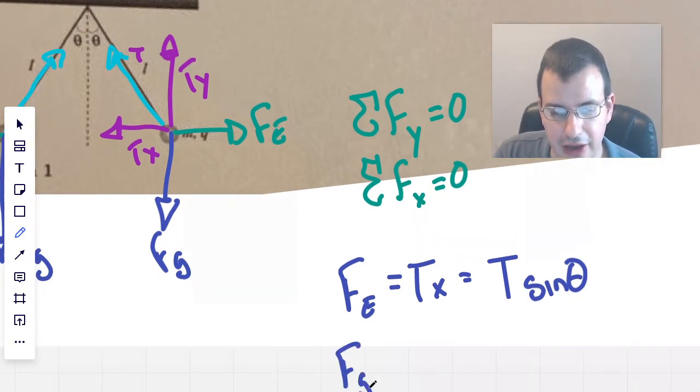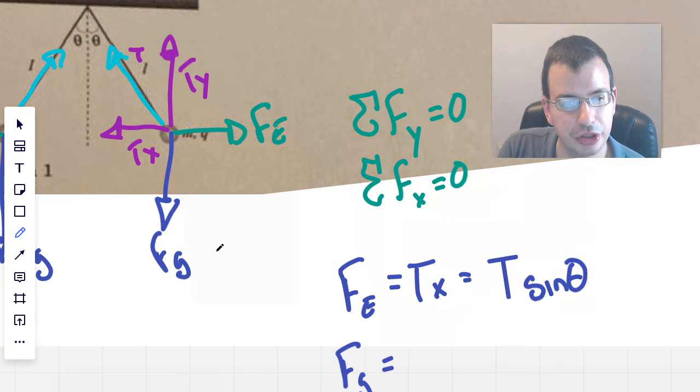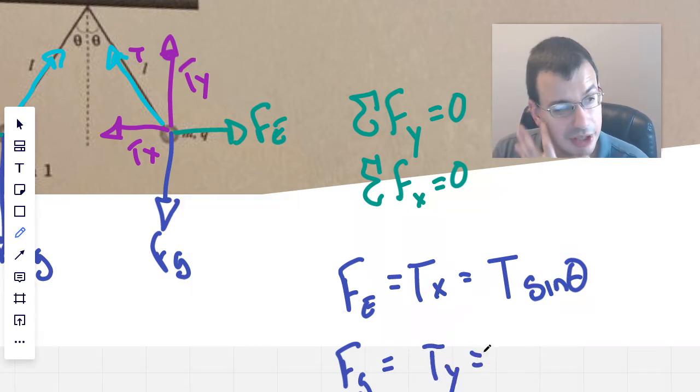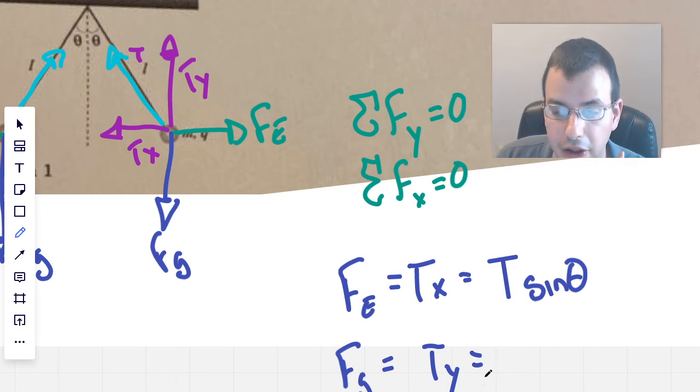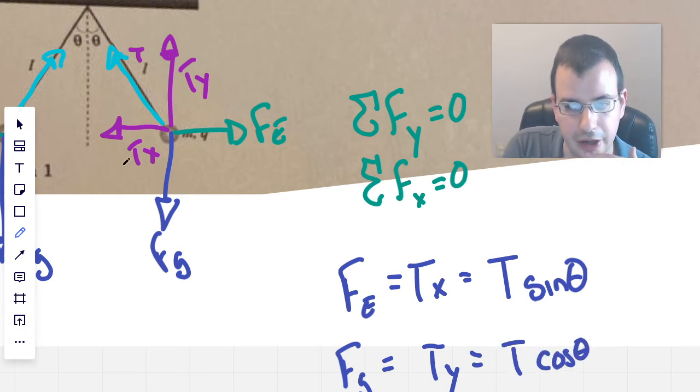So then we have force gravity equals, would be cancelled out by tension Y, or equal to the negative of tension Y, which would be T cosine of theta. That's reasonable.